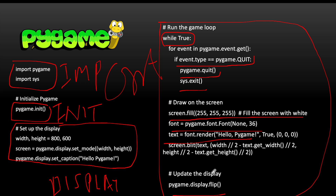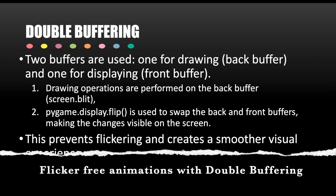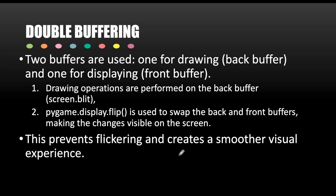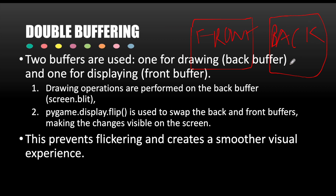There is a concept called double buffering used in every PyGame program. A buffer is basically a data storage. When randomly updating things on screen you would see flickering or non-coherent graphics. To avoid this, we maintain two buffers: the front buffer — what you currently see on the game — and the back buffer where you do your updates.